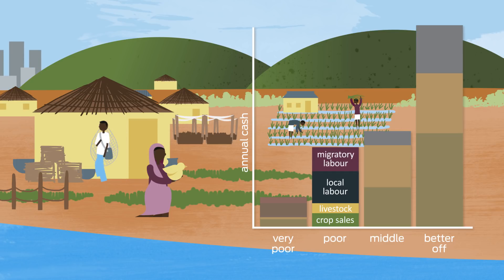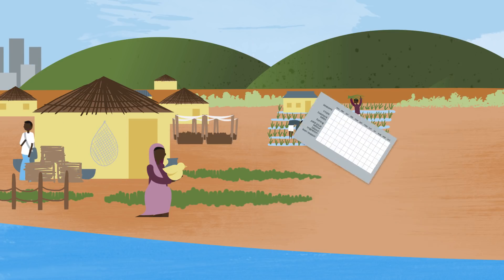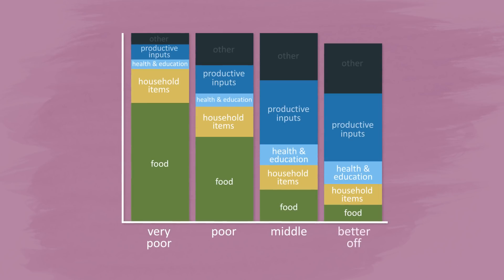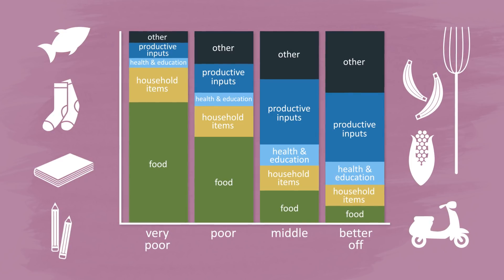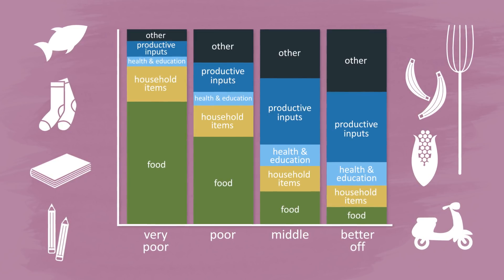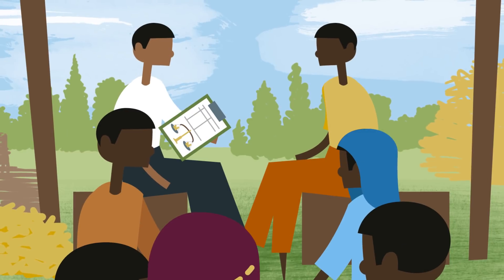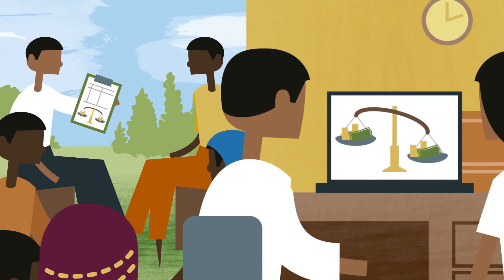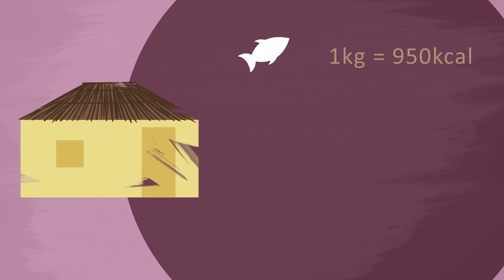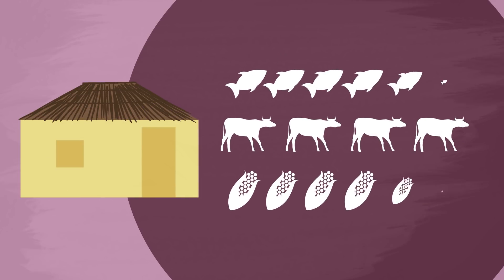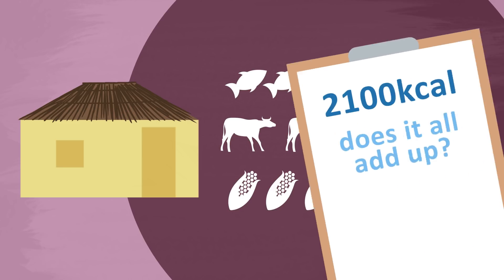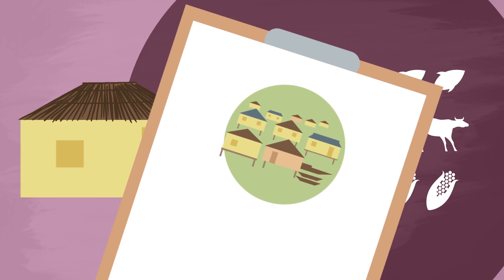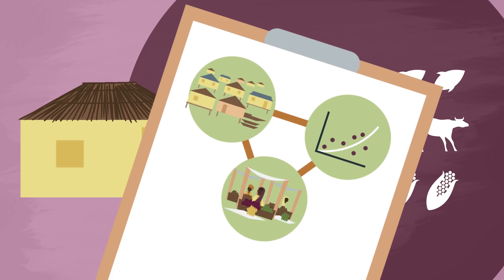One household member also migrates for work to a distant capital. By developing a seasonal calendar, we can see when in the year these activities are done. Households in different wealth groups also spend their money in different ways; understanding these expenditure patterns can help decision makers tailor cash transfer programs to meet their needs. HEA includes rigorous cross-checks within each interview and during analysis to ensure that the information is accurate. Expenditure and income must roughly balance, and food is converted into calorie equivalents, which allows you to add up household food over the year and compare it to the international reference point of 2,100 kilocalories per person per day. We triangulate all information collected at the village level with secondary data, and with data from markets and key informants.